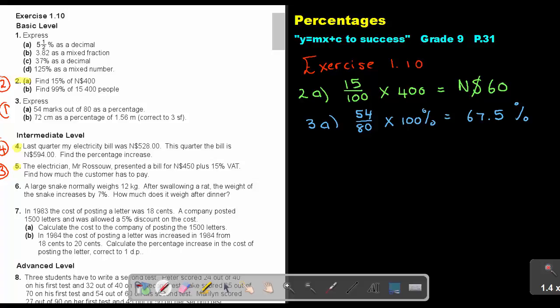And then number 4. Last quarter my electricity bill was this, this quarter the bill is this. So it's basically just going to be first finding the difference. So the difference will be that 594 minus the 528, and that will be 66. And then I will take the 66, put it over the first one, sorry, the first one, there's the first one, and that will be that 528. And then I make it a percentage by multiplying it by 100%, and that will give me 12.5%. Find the percentage increase. So the percentage increase is 12.5%.